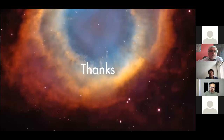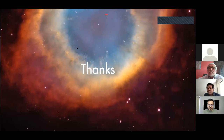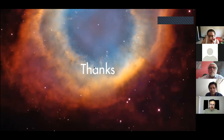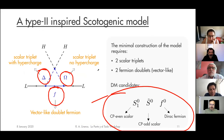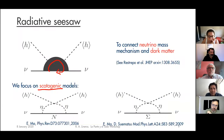Thank you, Roberto. We have questions. Hi Roberto — sorry, I arrived a little late to your talk — but I missed the motivation for including the vector-like fermion in the scotogenic model. Is it to escape some bounds from dark matter searches?